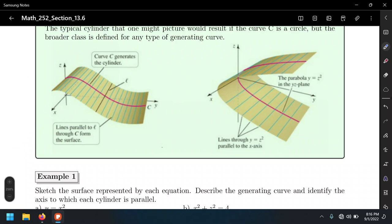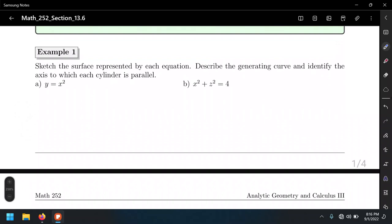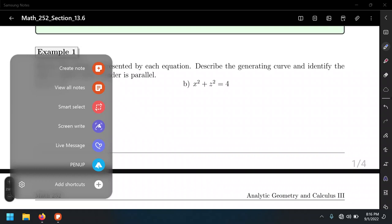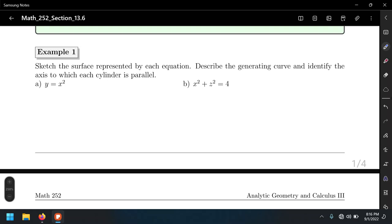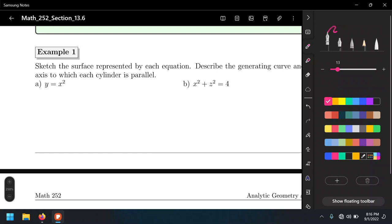Well, so let's sketch the surfaces represented by each equation right here. What do we have? Y equals X squared. Well, that doesn't look like anything 3D, does it? So this is what we're going to do. Notice in this case, number one, there's no Z.